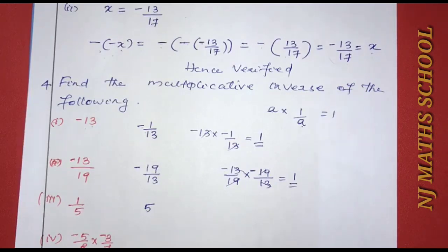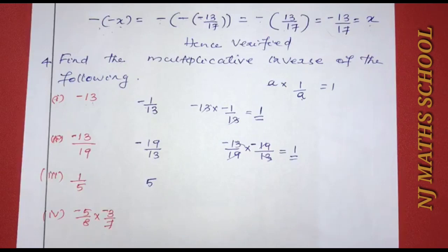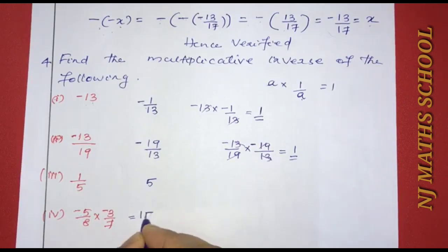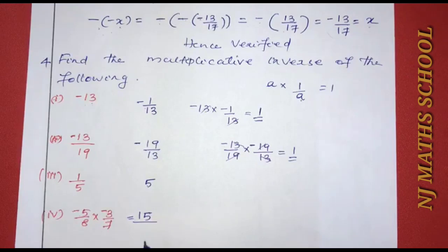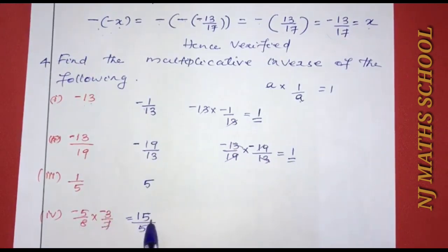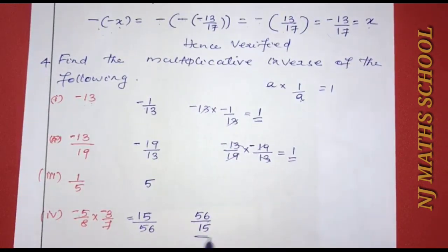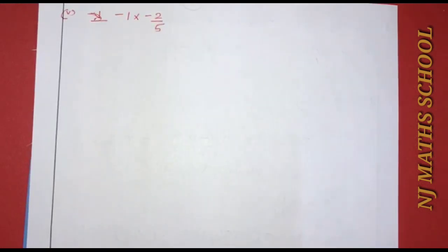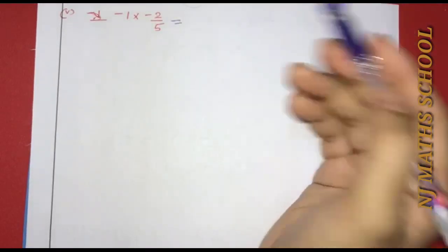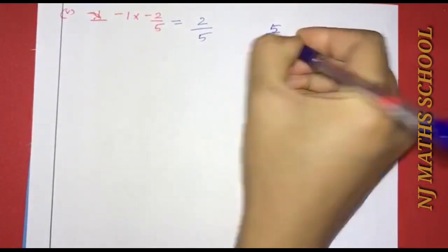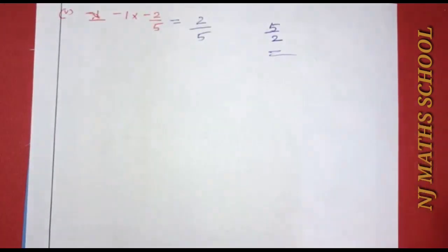For negative 5 by 8 into negative 3 by 7: first multiply these together — negative 5 into negative 3 is positive 15, and 8 into 7 is 56, giving 15 by 56. The multiplicative inverse of 15 by 56 is 56 by 15. For 2 by 5, the reciprocal is 5 by 2, and 2 by 5 into 5 by 2 equals 1.